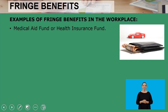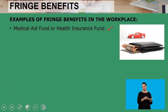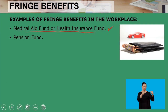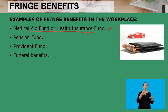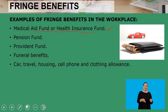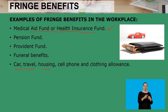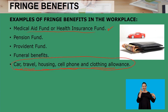Examples of fringe benefits in the workplace include your medical aid fund or health insurance fund. You also have pension fund, provident fund, and federal benefits. You have allowances: car allowance, travel allowance, housing allowance, cell phone allowance, and clothing allowance. All of these fall under one category — fringe benefits.